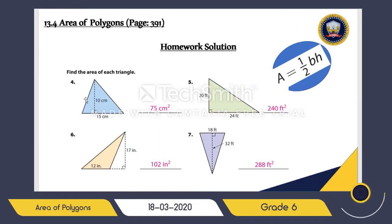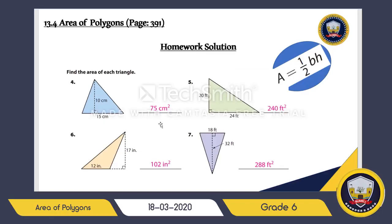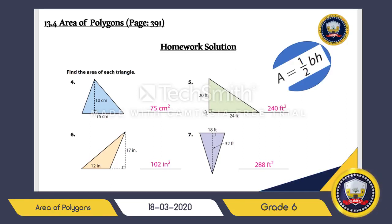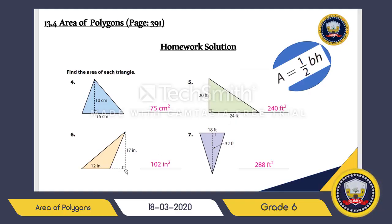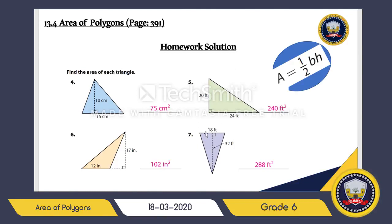We have four types of triangles here. Remember the rule for triangle area: one-half times the base times the height. For the right triangle, this is the height and this is the base. For the obtuse triangle, the base is 12 inches and the height is 17 inches — apply the same rule. For the final one, don't get confused: this is your base and this is your height.